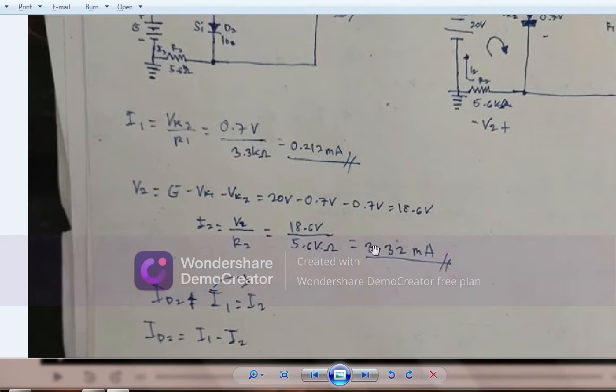Since we already have the components for i2, the formula of i2 equals V2 over R2. That means i2 equals 18.6 volts over 5.6 kilo ohms, so the value of i2 is 3.32 milliamps.